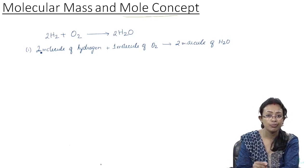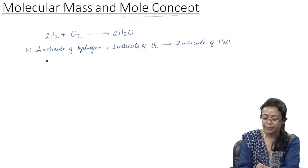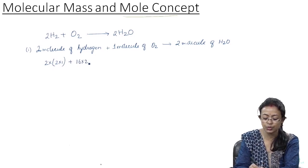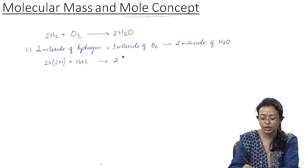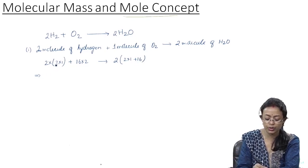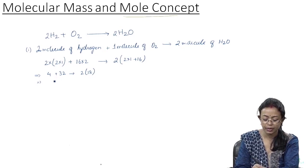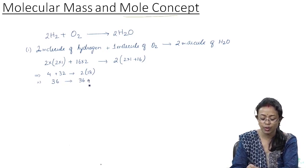In terms of molecular mass, that is 2 × 2 plus 1 × 32, to give 2 × (2×1 + 16), which equals 4 + 32 = 36. So 36 grams of reactants gives you 36 grams of water, which clearly demonstrates the law of conservation of mass.